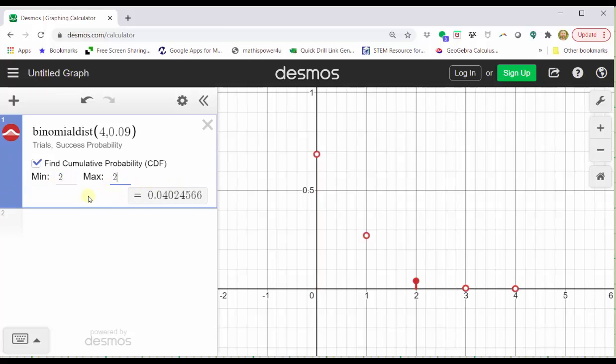Which gives us a probability at the bottom of cell one, and also draws a vertical line segment where X equals two. Either way, the probability is approximately 0.0402.